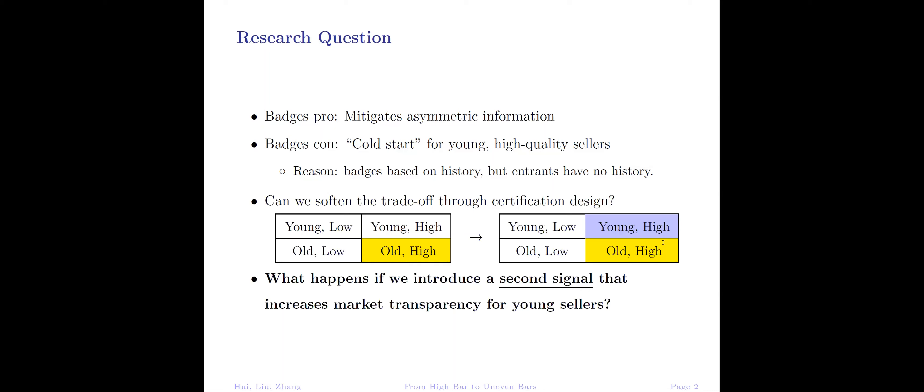A natural solution for this is to create a second signal that can separate young high-quality sellers. Therefore, we ask: what would happen if we introduce a second signal that increases market transparency for young sellers?